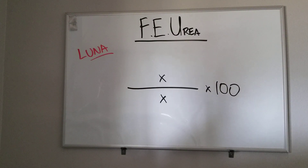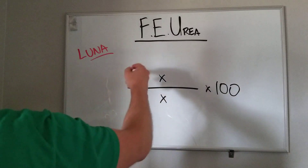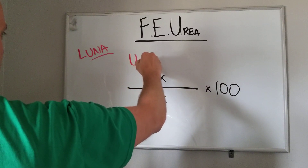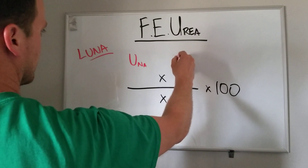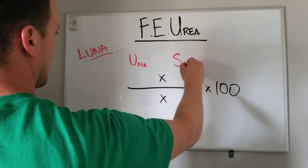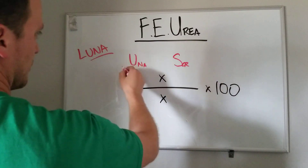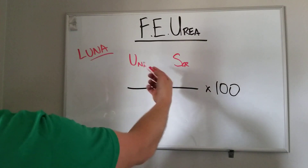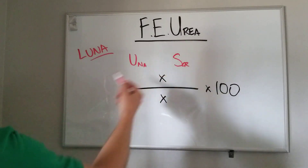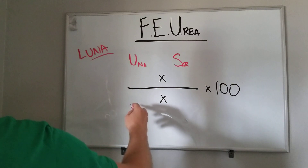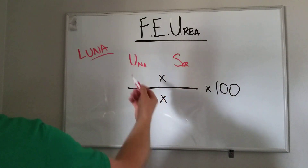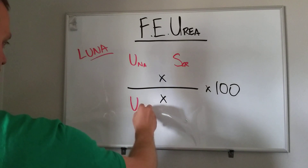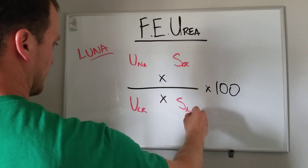Back to Luna — in your FENa calculation, you start with urinary sodium. Luna Lovegood, and then everything's opposite. I'll write up the FENa so you know what I'm talking about. The opposite of urinary is serum, and the opposite of sodium for this equation is creatinine. Then we keep flipping: the opposite of serum creatinine is urinary creatinine, and the opposite of that is serum sodium.